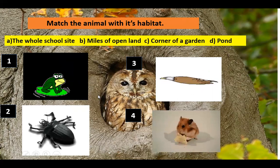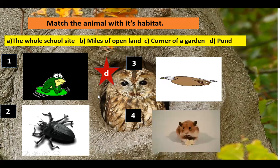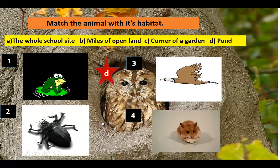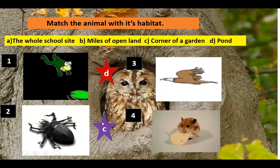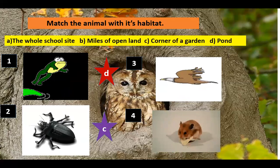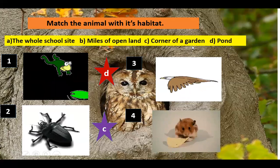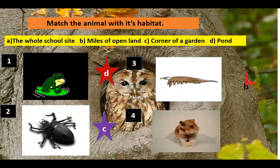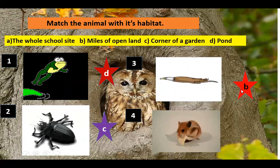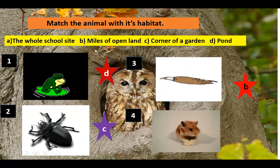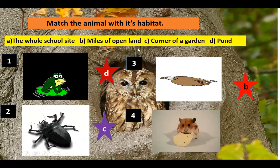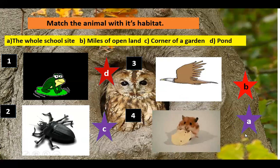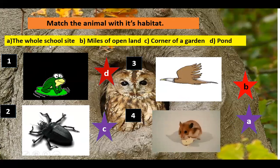Let's check the answers. First one is D — that means pond. Second one is C — corner of a garden. Third one is B — miles of open land. And the last one is Option A — the woodland side.